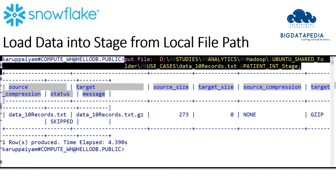Now we have created an internal table and stages successfully. We can load data from our local path into the stage using the PUT command. The syntax for PUT is: source as the local path, and destination as the internal stage. Here is an example to load data from the local path into the internal stage. Once executed successfully, the data will be loaded into the stage.